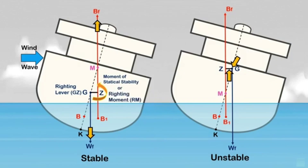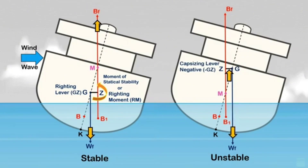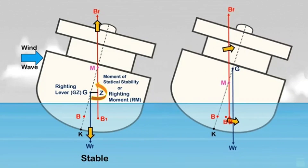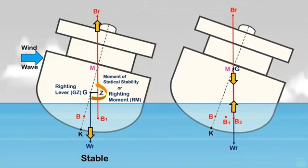In unstable conditions, when the ship is heeled at some angle, a capsizing lever is created at the high side of the ship. The weight force acts vertically downward through the center of gravity at the low side, while the buoyancy force acts vertically upward at the high side through the center of buoyancy, creating a moment that tends the ship to heel further. This is called the capsizing moment. However, this moment will not capsize the ship — it will only tend to heel the ship further until the ship's center of buoyancy is directly above the ship's center of gravity.